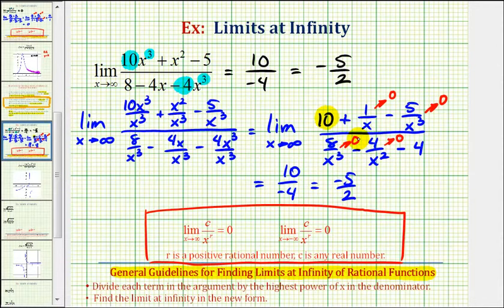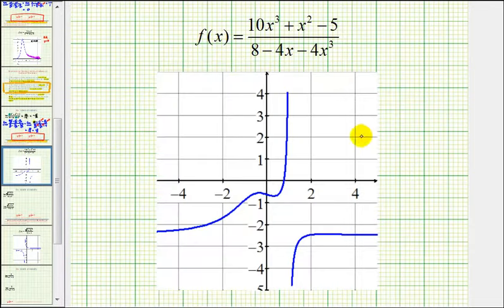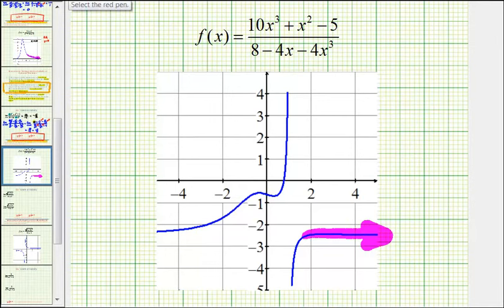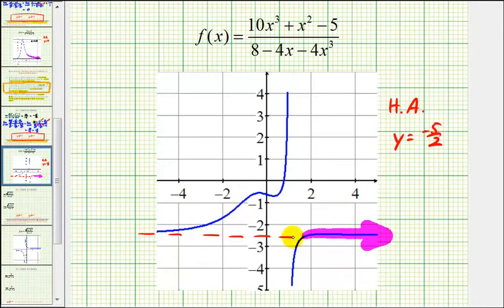So as you can see, there's more than one way to determine limits at infinity of rational functions. To confirm these limits, it's always a good idea to graph the rational function and analyze the graph. As x approaches positive infinity, we're moving right along the graph, and it does appear that the function value is approaching negative two point five, or negative five halves. Also remember that since this limit equals negative five halves, graphically we have a horizontal asymptote of y equals negative five halves. Remember, a graph can cross a horizontal asymptote, but it cannot cross a vertical asymptote. I hope you found this explanation helpful.